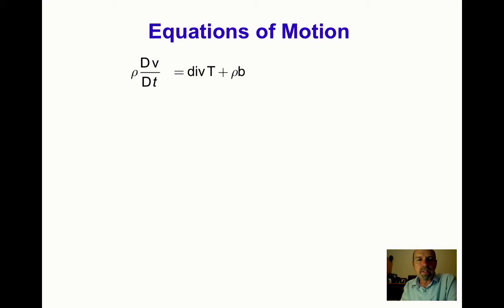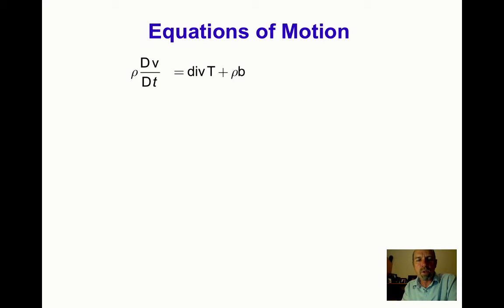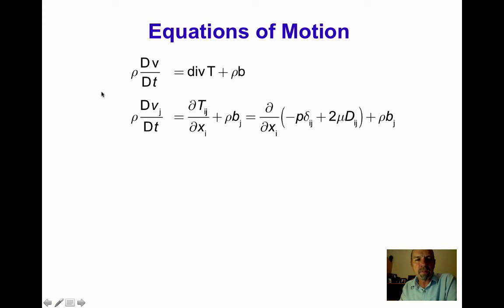Recall that the equations of motion state that rho times the acceleration — the material derivative of the velocity with respect to time — equals the divergence of the stress plus rho times the body force vector. In index notation: rho dV_j/dt equals del T_ij / del x_i plus rho b_j.